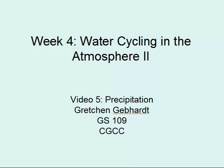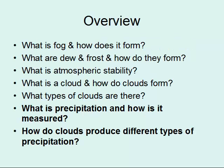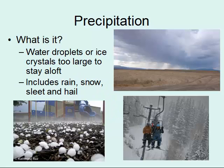Welcome back to week four. In our final video of this week, we're going to talk about precipitation — how it's measured, what it is, and how clouds produce different types. Precipitation is basically water droplets or ice crystals that get too large to stay aloft in the air, and gravity pulls them down to the ground surface. This can be rain, snow, hail, or sleet.